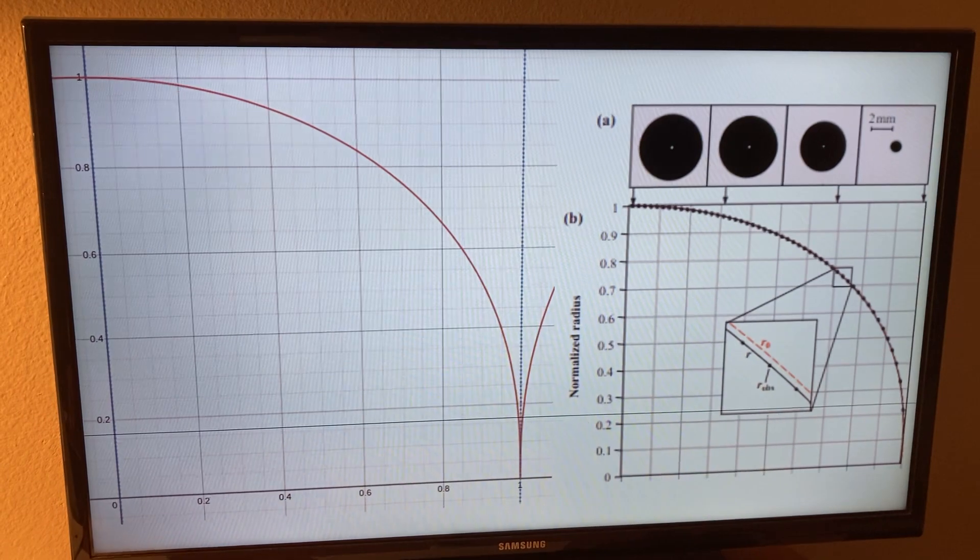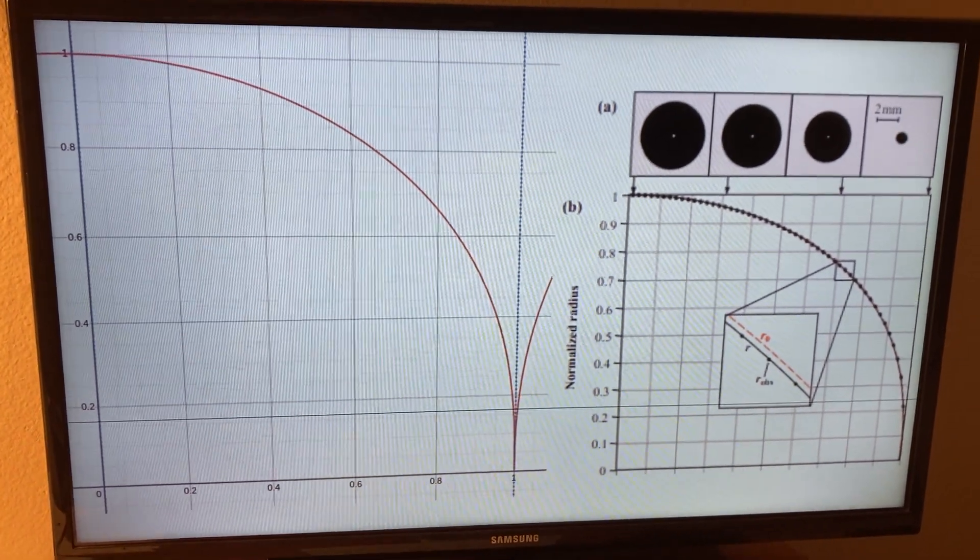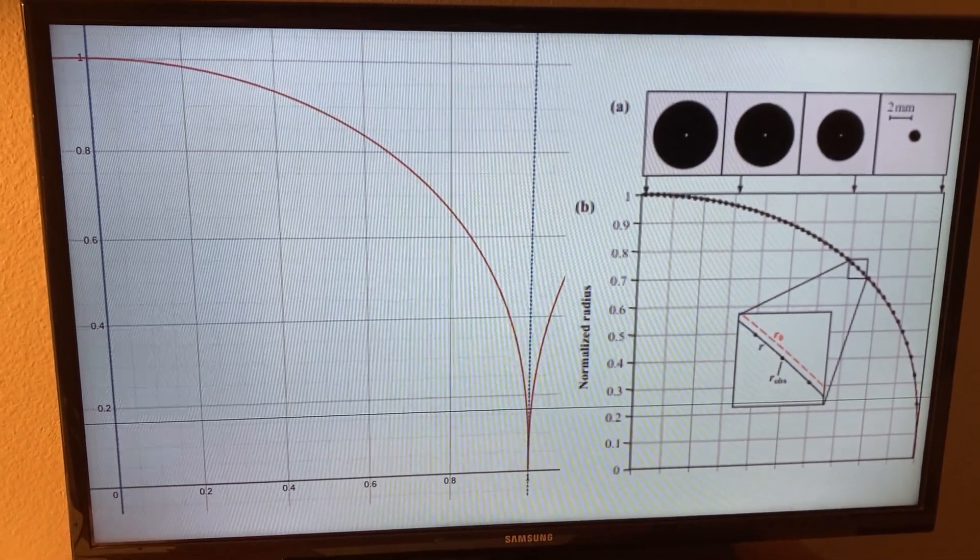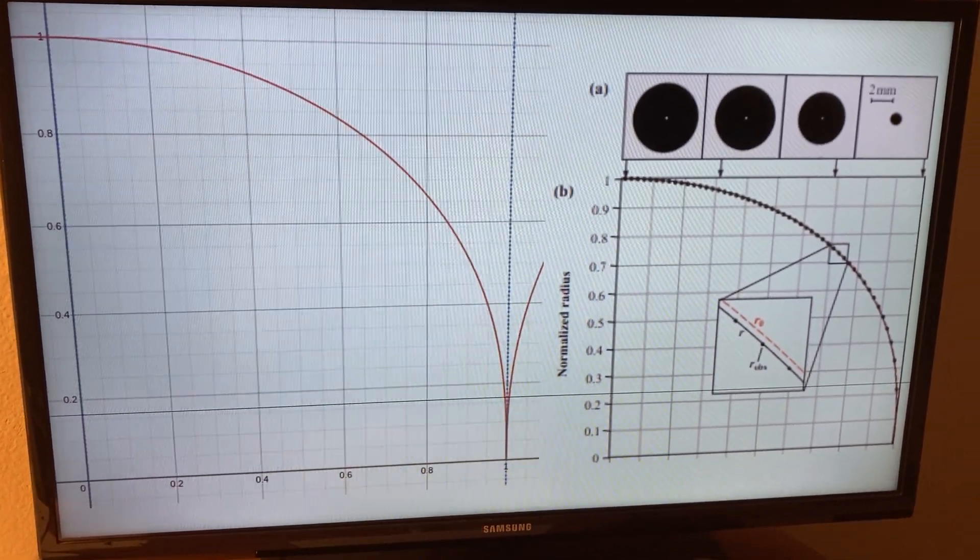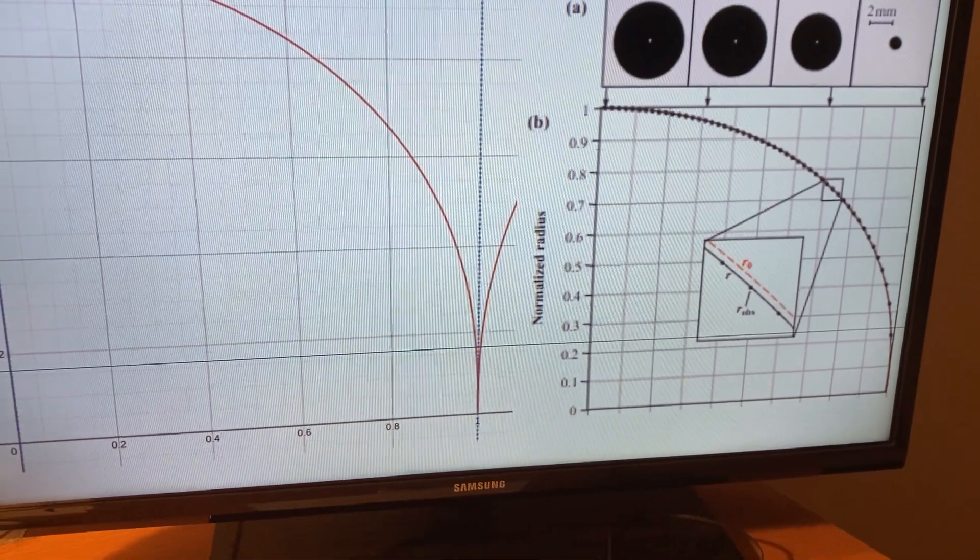And then on the right, you have an equation from the paper I just showed you, which plots both the approximation function r sub 0 and the actual solution r, which is based on real empirical data. And you can see they're really close to each other.